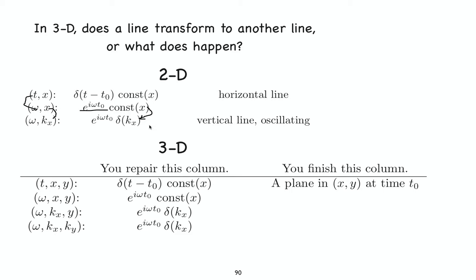So what we ended up with here is a vertical line. It exists only at kx equal to zero. It's a vertical line, and it oscillates like crazy. So that's the 2D world.